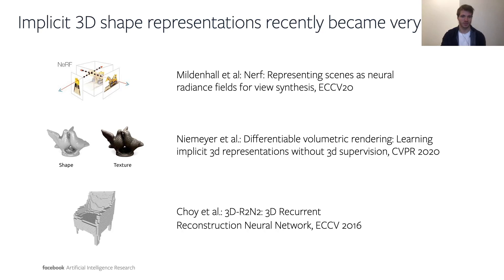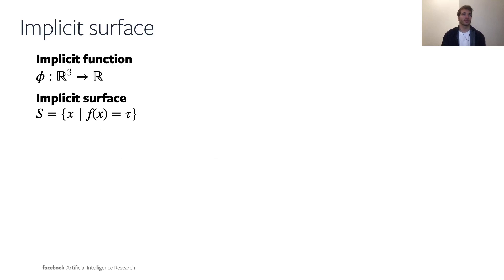We will first start with some formal definitions to set up the stage for implicit rendering. An implicit surface is constructed with the help of a function Phi which maps 3D points X to a scalar value. More specifically, the function Phi defines the surface as a level set of the function — the surface is a set S of all 3D points X whose value of Phi equals the given constant Tau.